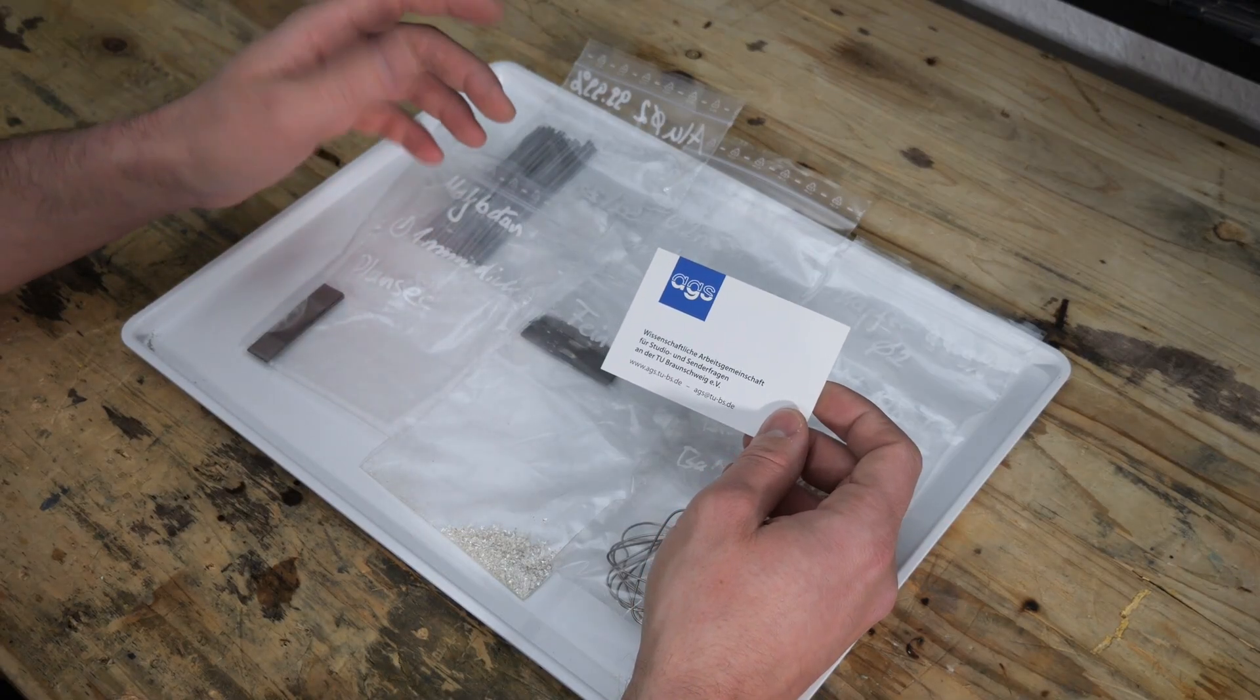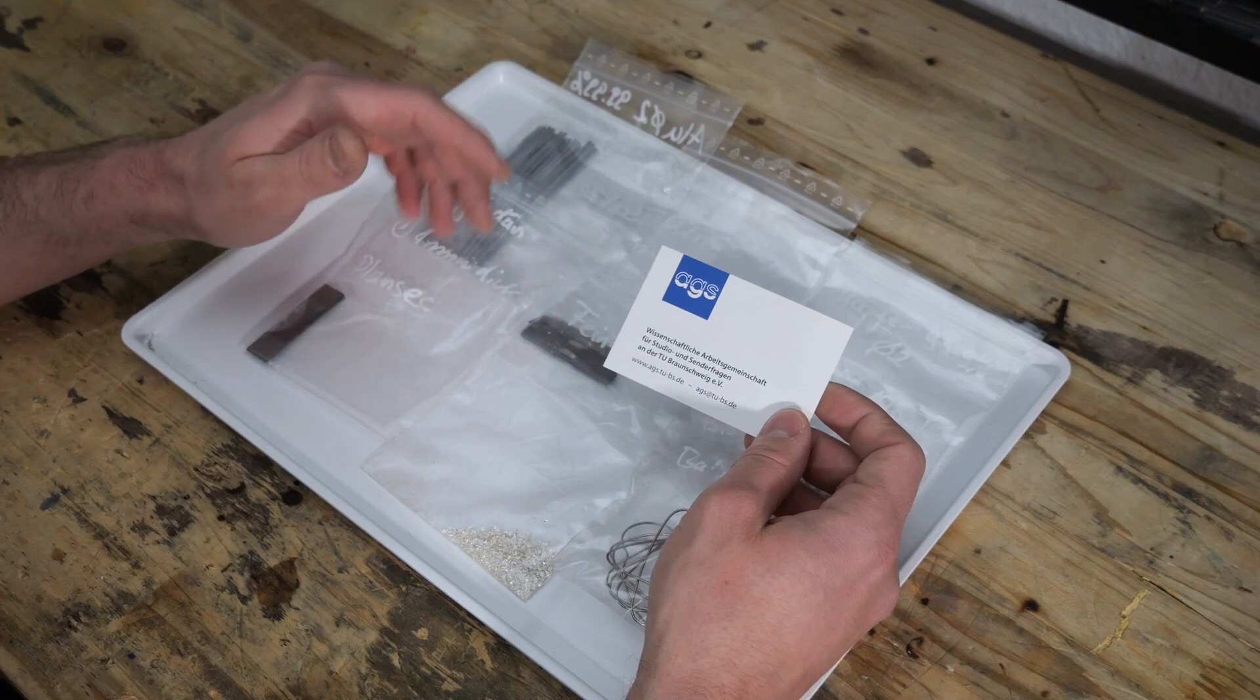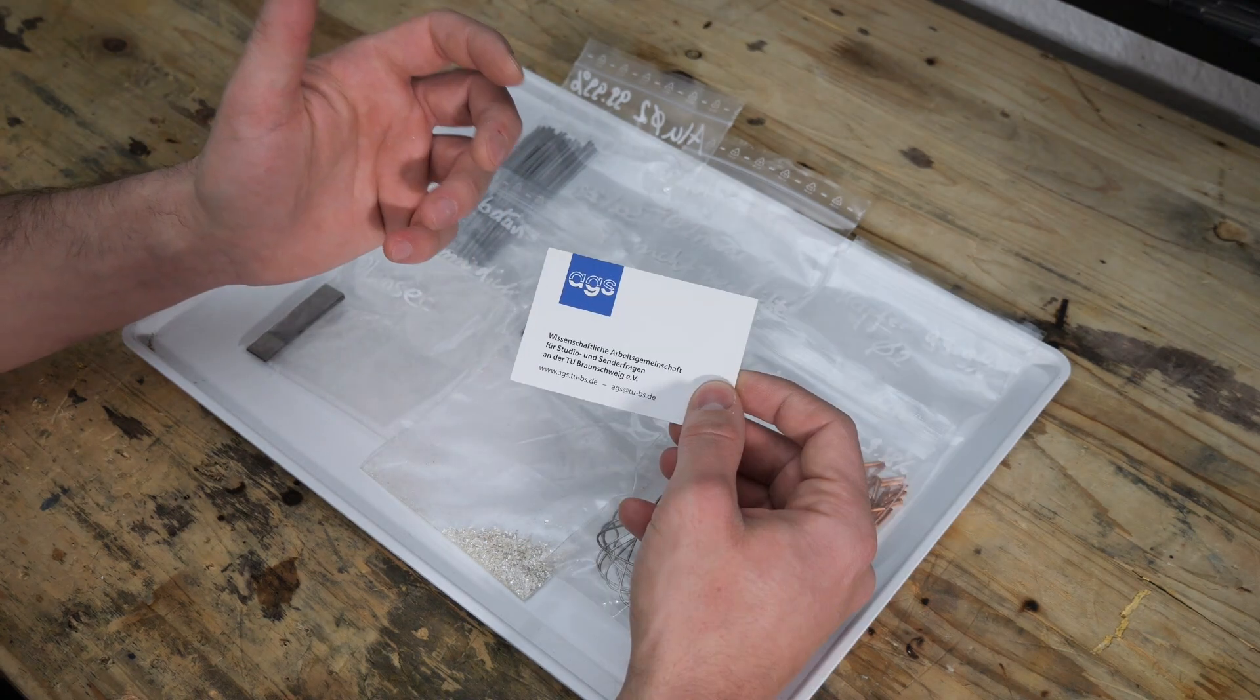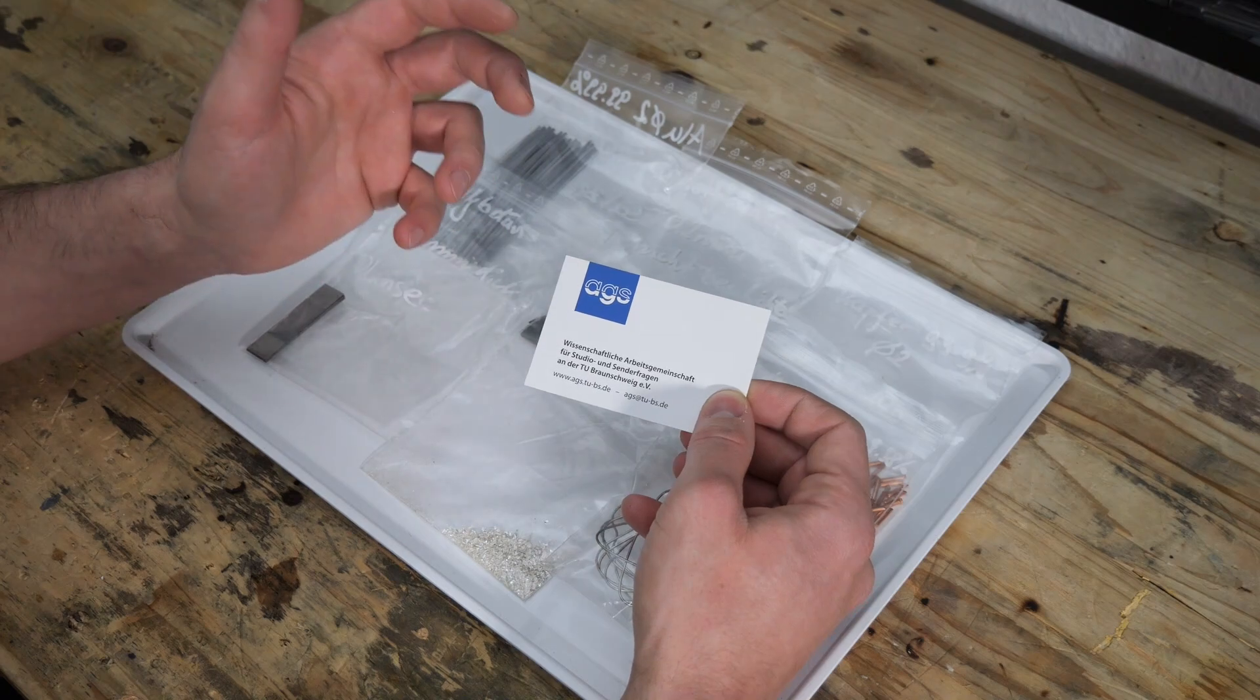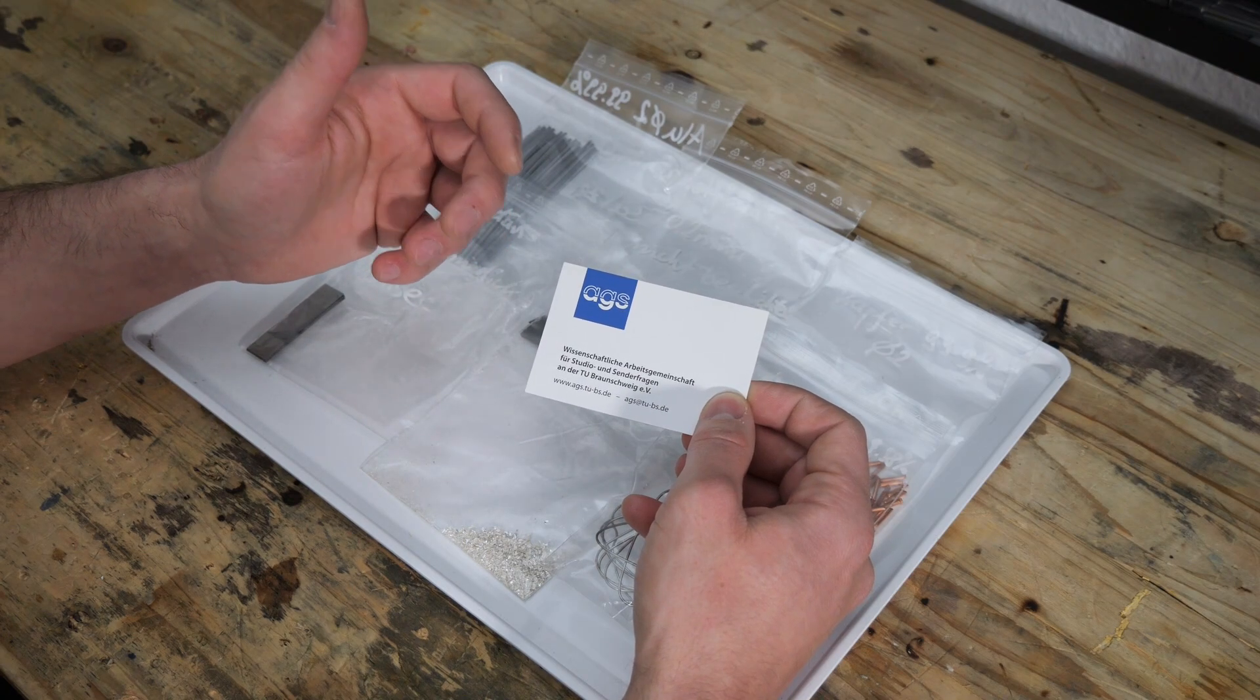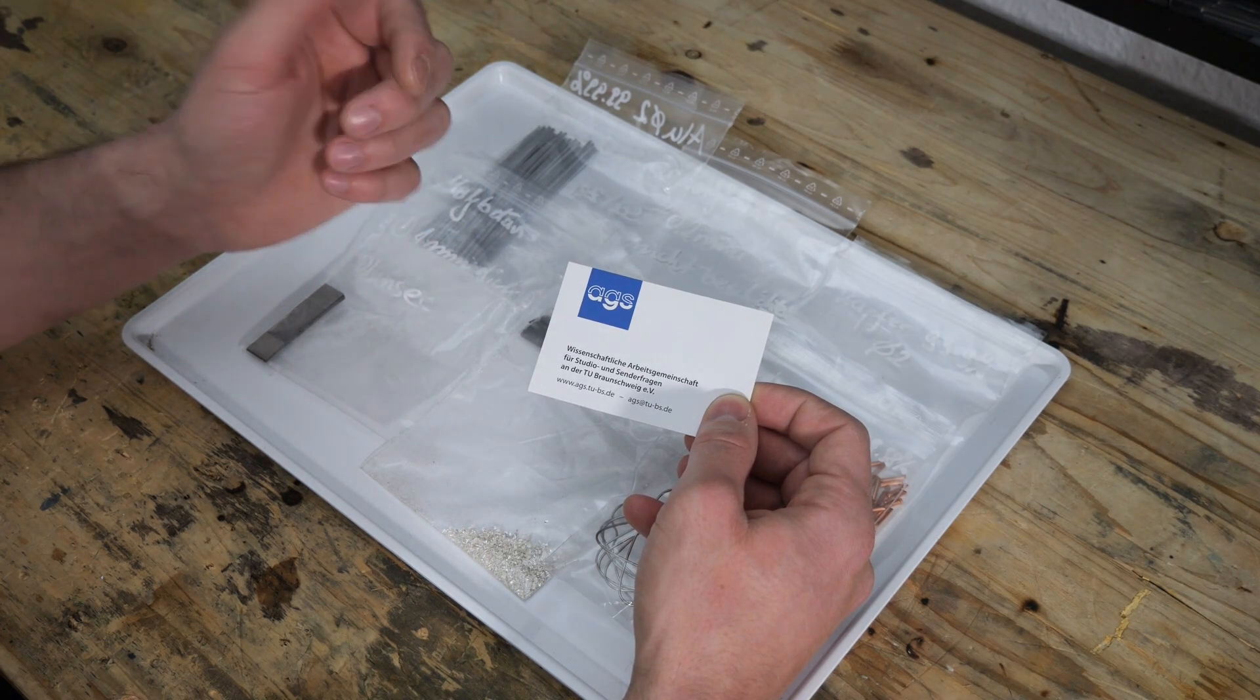I again want to thank the member of the AGS for sending me his personal materials so I could use them in my experiments. AGS is a hackerspace in Braunschweig that also works with vacuum systems. So if you are interested in that kind of stuff you should definitely check them out. You can find a link in the video description.